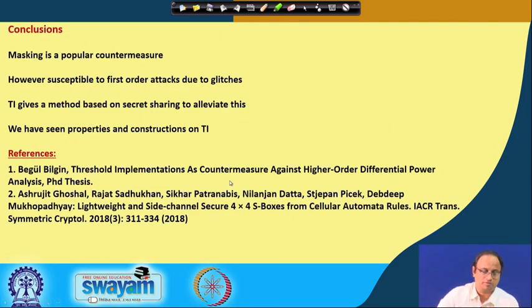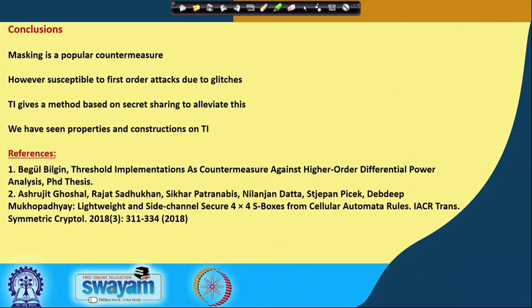To conclude: masking is a popular countermeasure but is susceptible to first-order attacks due to glitches. Threshold implementation (TI) gives a method based on secret sharing to alleviate this. We have seen properties and constructions of TI. Key references include a PhD thesis that gives a comprehensive account of how to implement TI and its further implications. Thank you for your attention.